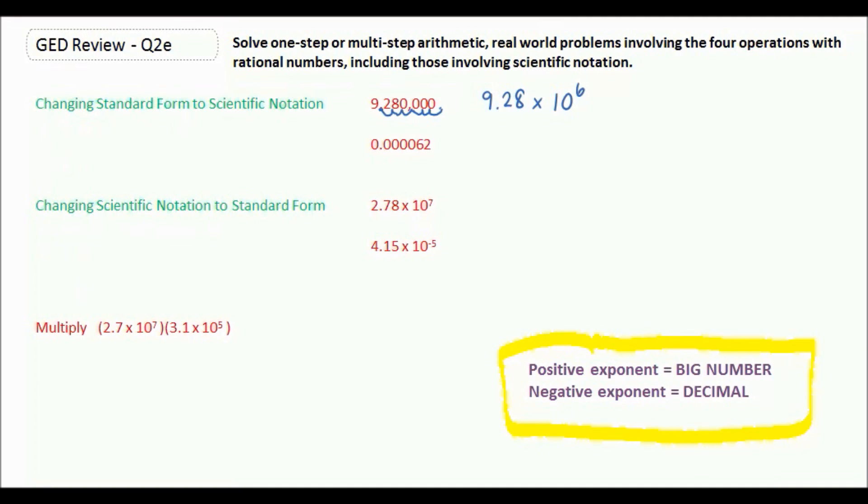For this one, since it's a decimal, we know it's going to have a negative exponent. So we need to find a number between 1 and 10. That would happen by placing the decimal between the 6 and the 2. And then we're going to count how many we moved. So 1, 2, 3, 4, 5. So it's 6.2 times 10 to the negative 5th.